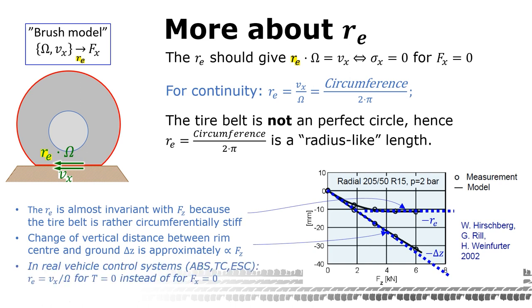At last, I would like to note that in real-time vehicle control systems, where we do sensing and estimation of the rolling effective rolling radius re, in that case, we often use the definition for zero torque instead of zero force. And the difference is small in most operating conditions.